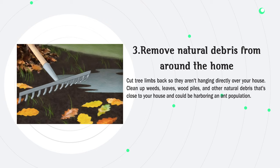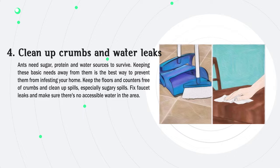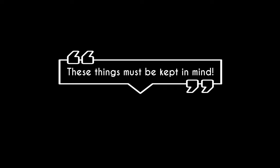Step 4: Clean up crumbs and water leaks. Ants need sugar, protein, and water sources to survive. Keeping these basic needs away from them is the best way to prevent them from infesting your home. Keep floors and counters free of crumbs and clean up spills, especially sugary spills. Fix faucet leaks and make sure there's no accessible water in the area.